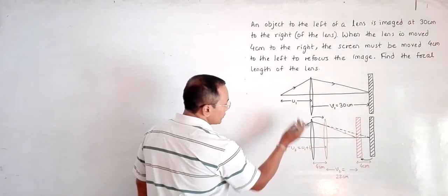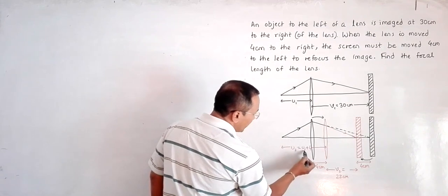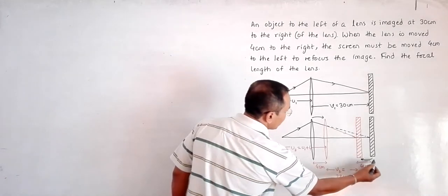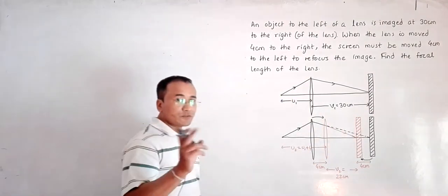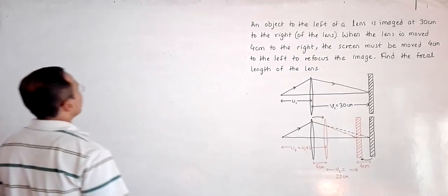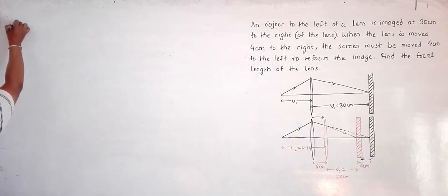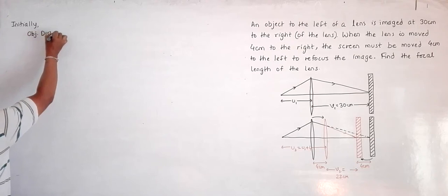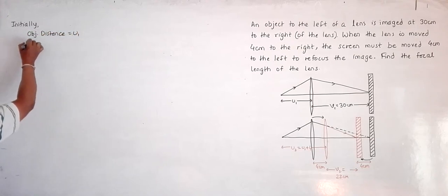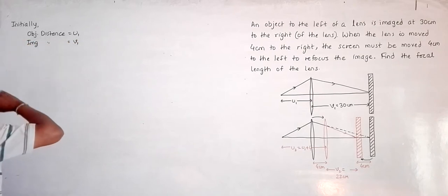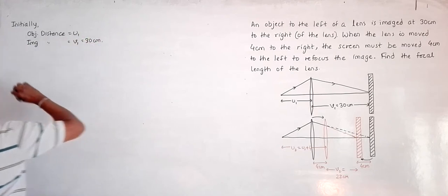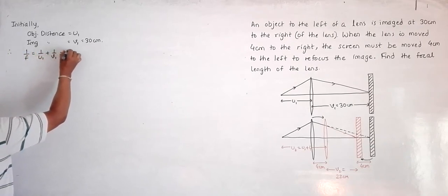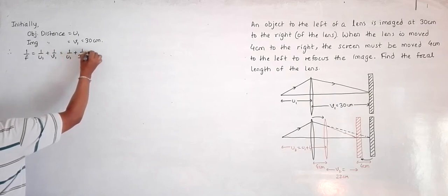The object distance will change: initially it was u1, now u2 equals u1 plus 4. The new image distance v2 equals 30 minus 4 minus 4, which is 22 centimeters. Writing it in a table: initially, object distance equals u1, image distance v1 equals 30 centimeters. Therefore, equation 1 is: 1/f = 1/u1 + 1/v1 = 1/u1 + 1/30.